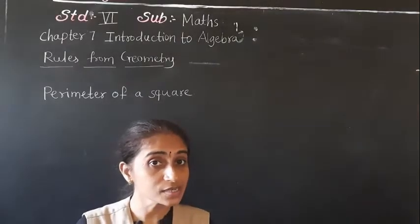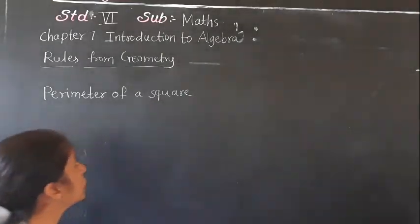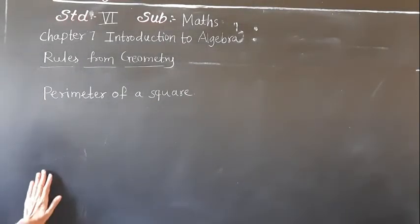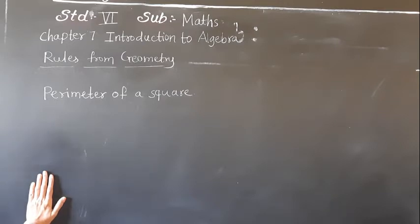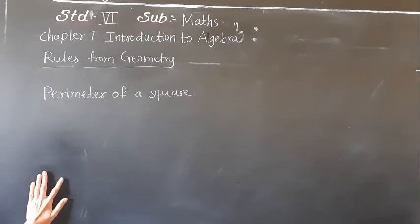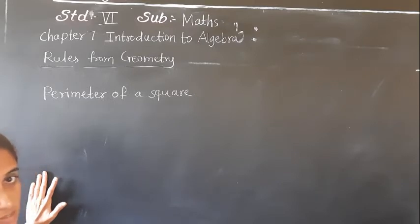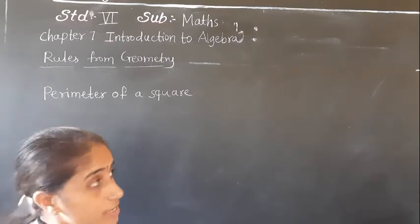Good morning students. Let's learn today rules from geometry. Now we know that the perimeter of a polygon is the sum of the lengths of its sides.